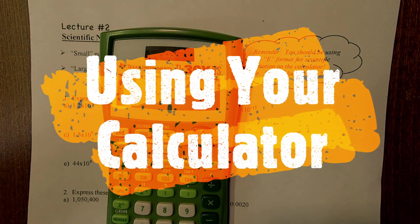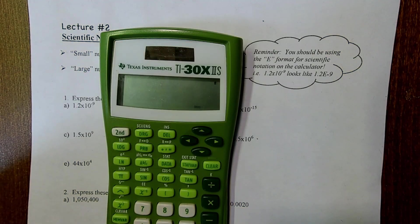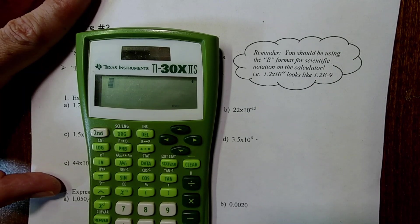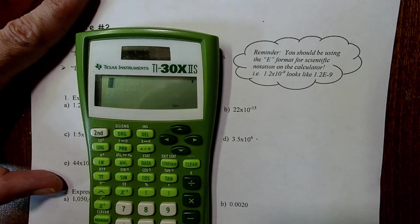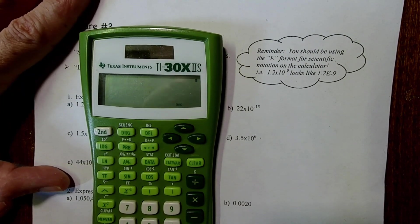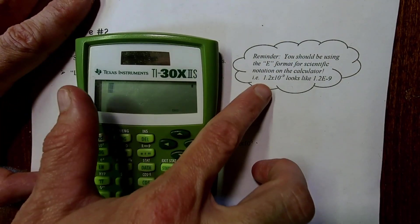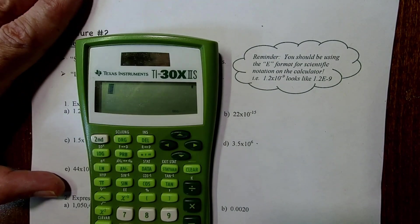So I quickly want to go over how to use your calculator to enter numbers in scientific notation. A lot of students will argue with me on this point and say, well, I know how to do it. They put times 10 carat. Trust me, that leads to problems down the line, and you've got to use a lot of parentheses. So using the E format is the way to go, especially in chemistry. Let me show you how that works.